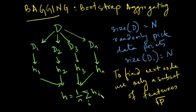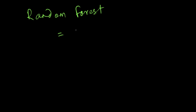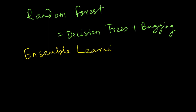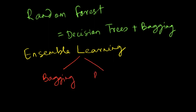Essentially, random forest is a combination of bagging on decision trees — random forest equals decision trees plus bagging. This method of using multiple machine learning algorithms and combining them to find a new predictor is broadly called ensemble learning. The three primary types of ensemble learning are: bagging, which we just saw; boosting; and stacking.